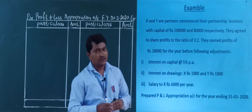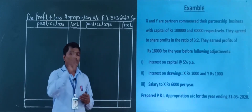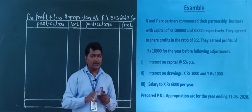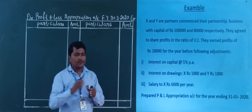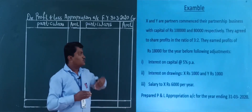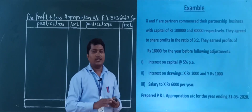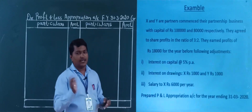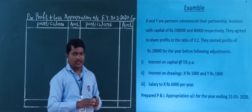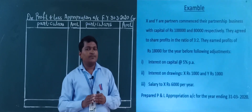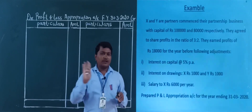So now we go for the solution. X and Y are partners. X invested rupees 1 lakh and Y invested rupees 80,000 — that is their capital. Now we start preparing the profit and loss appropriation account for the year ending 31st March 2020.